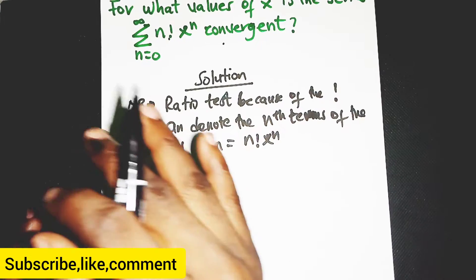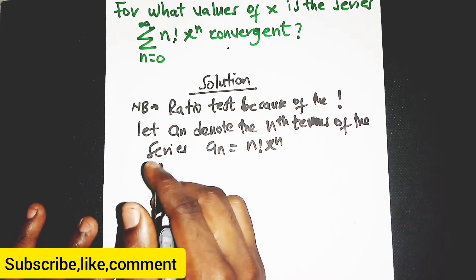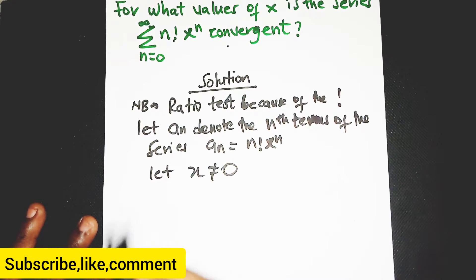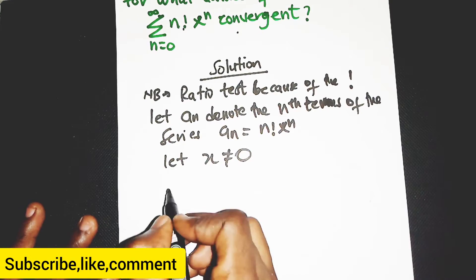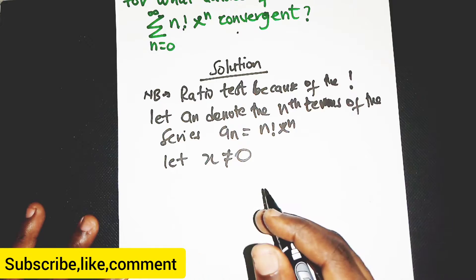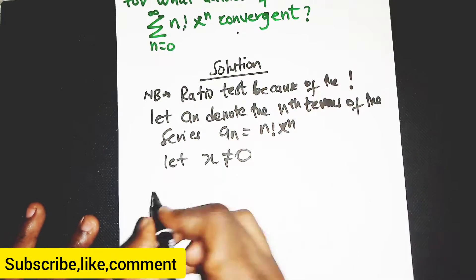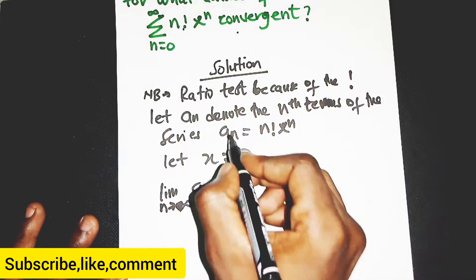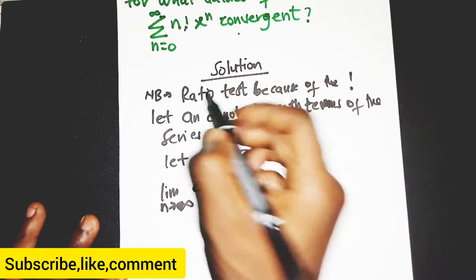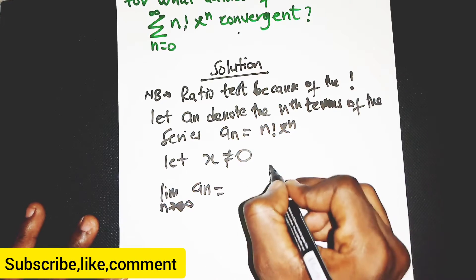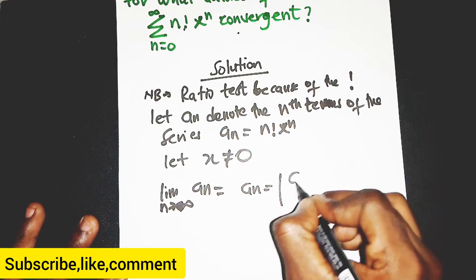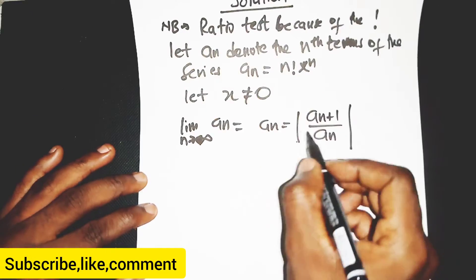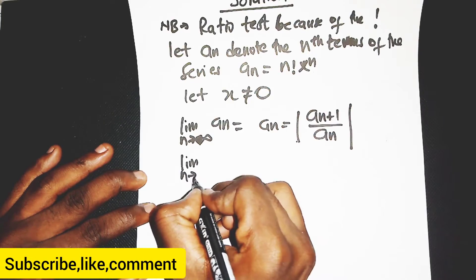Now we are going to make an assumption because we have to find the value of s for which the series is convergent. We let s not equal to zero. For the ratio test, we find the limit as n approaches infinity of the absolute value of a_{n+1} over a_n.